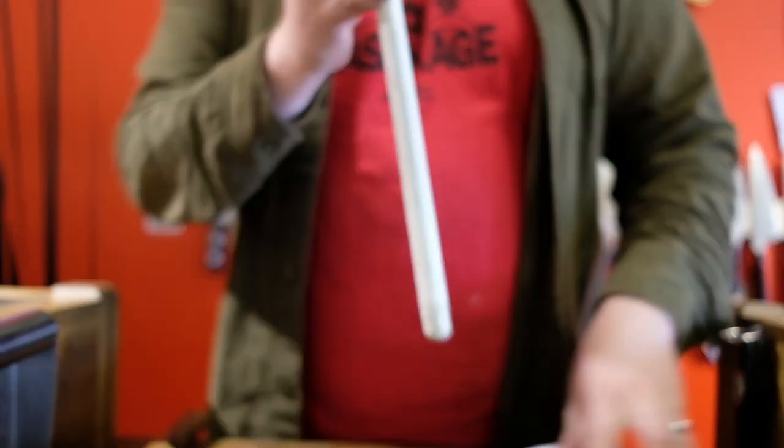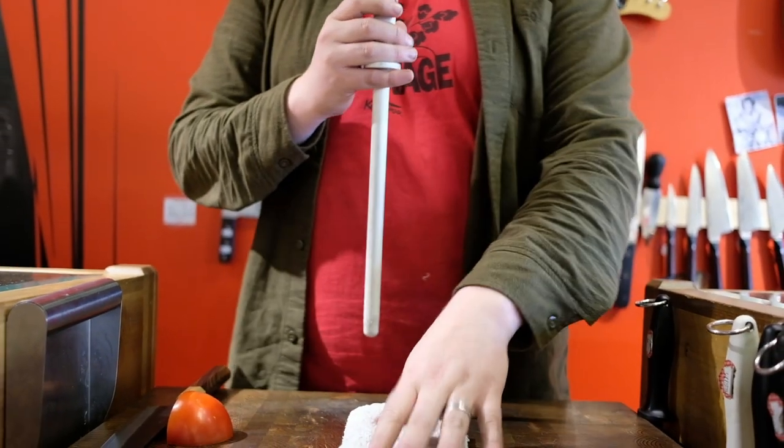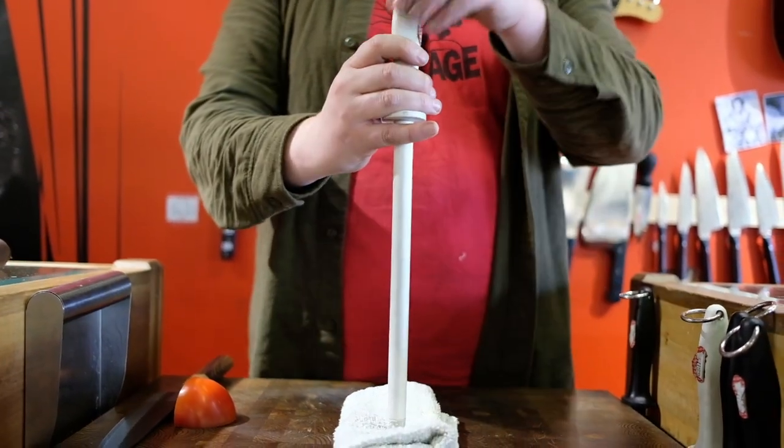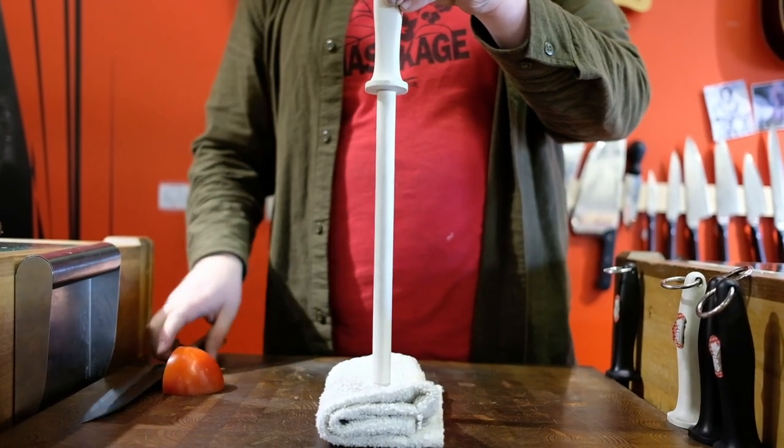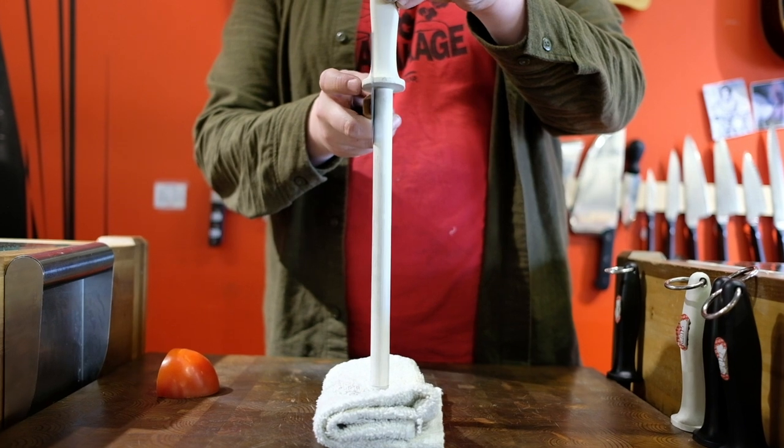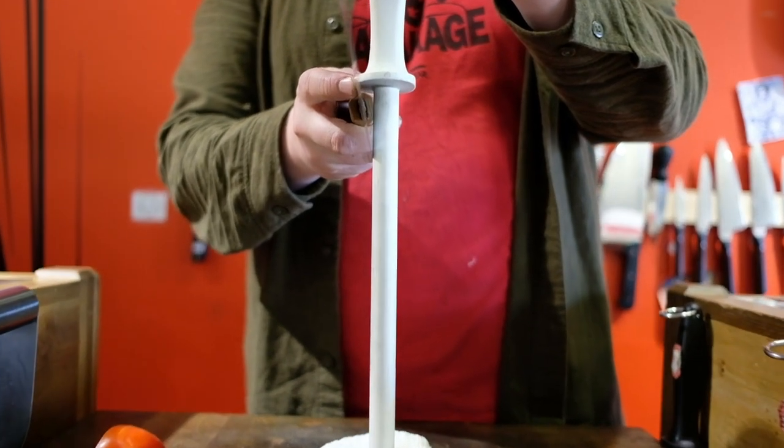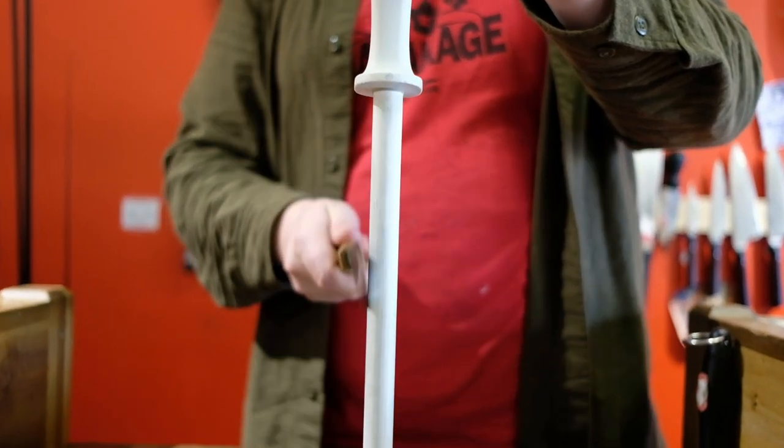To use this, I put a rag in the middle of my board and place the rod upside down. The rag keeps it from sliding around and gives easy access to the angle measuring guide. 15 degrees for this Japanese knife from the heel to the tip.